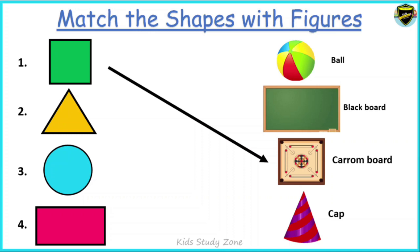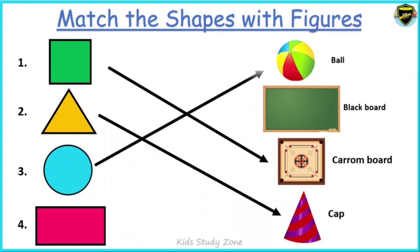Now let's see shape number three — this is a circle. From the remaining two options, which figure does the circle match? Is it a ball or a blackboard? The shape circle matches with the figure ball. Very good, children!